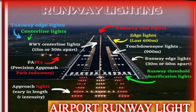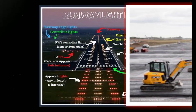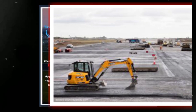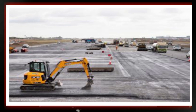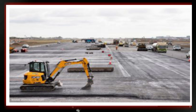Use in various weather conditions: PAPI lights are especially valuable during low visibility conditions, such as fog or heavy rain, when the pilot's ability to visually judge the correct approach angle may be compromised. The clear and intuitive light indications provide additional confidence and safety during challenging weather. In summary, the PAPI system is a crucial visual aid that assists pilots in maintaining the correct glide path during the final approach and landing phase. It enhances the safety and precision of landing operations, especially in adverse weather conditions, by providing clear and immediate feedback to the flight crew about their approach angle.